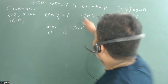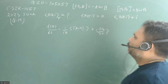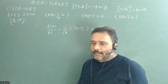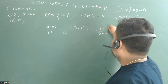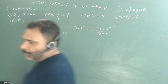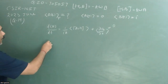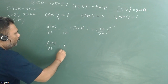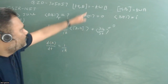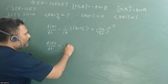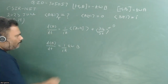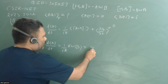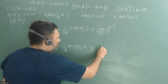This is Ehrenfest's theorem. It is given as [H, A], so we can change the minus sign accordingly. Since A is not a function of time, the ∂A/∂t term is zero. So we have d⟨A⟩/dt = (1/iℏ) times ⟨[A,H]⟩, which gives us ℏωB after substituting the commutator. The ℏ cancels, giving d⟨A⟩/dt = (ω/i)⟨B⟩.